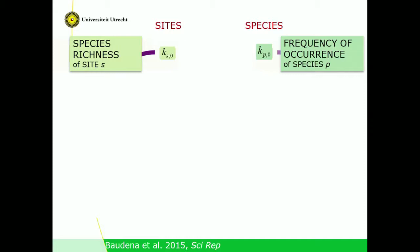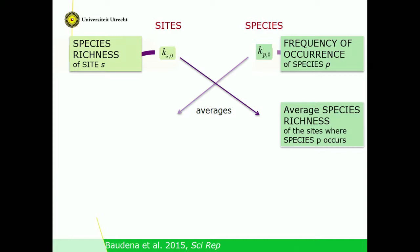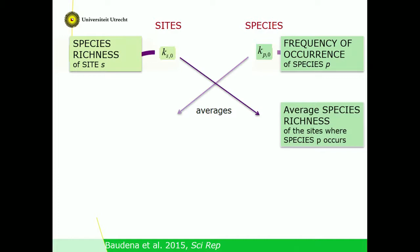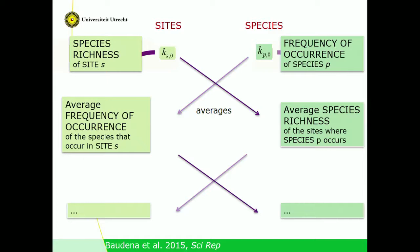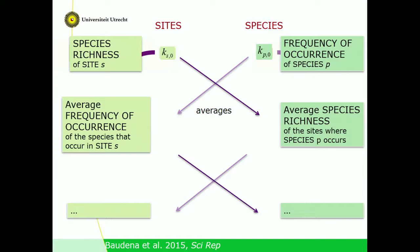The method 'reflects' information by simple averaging: it averages the species richness of sites where a certain species occurs, and on the other hand, it averages the frequency of occurrence of all species living in a certain site. But it doesn't stop there — it keeps making averages iteratively, and the method converges asymptotically.